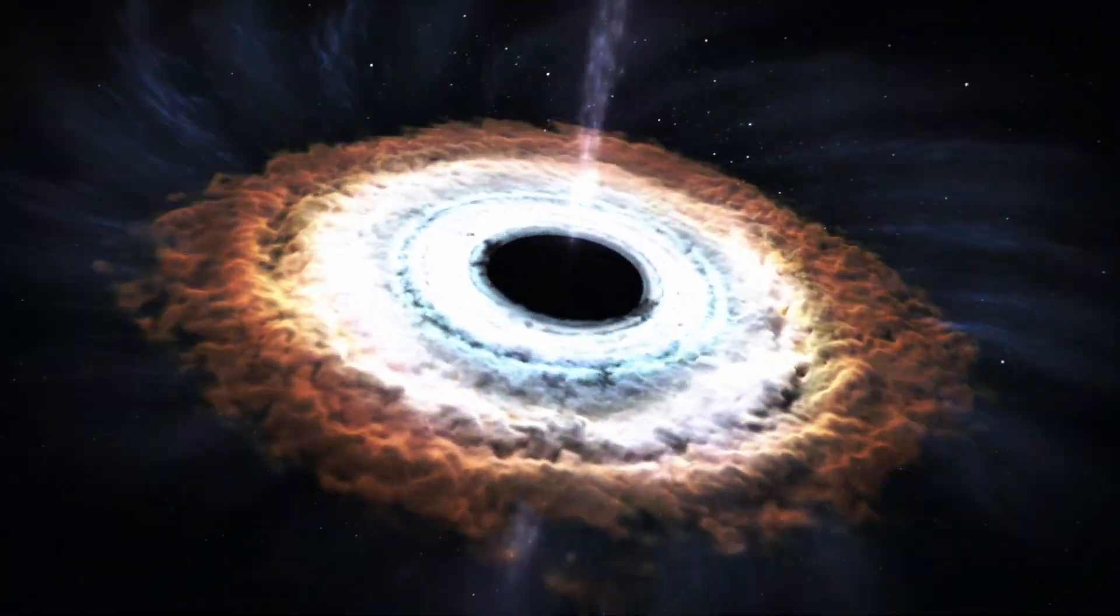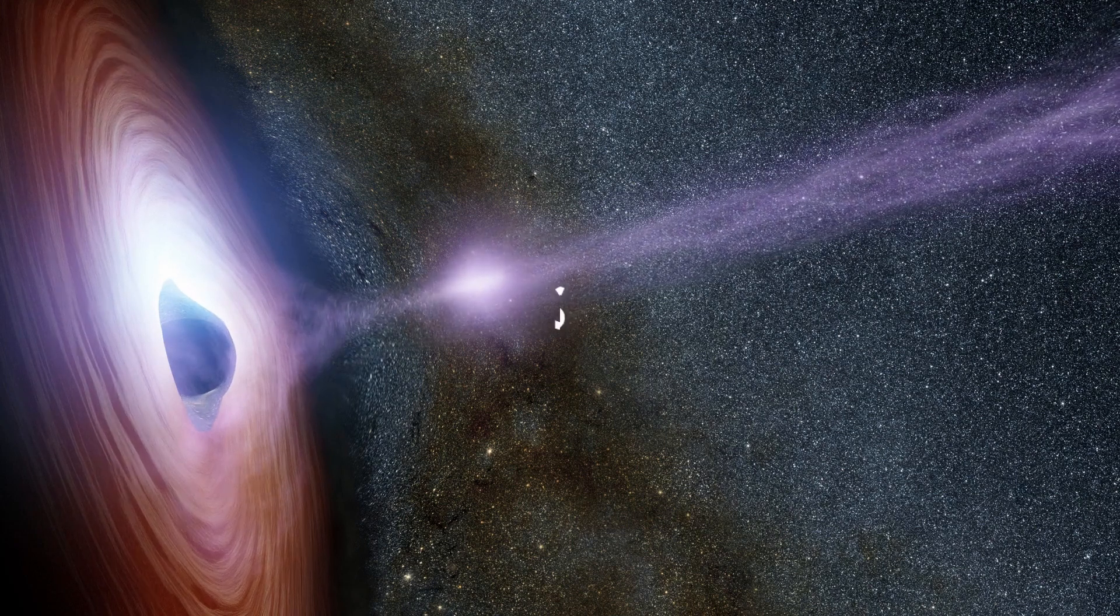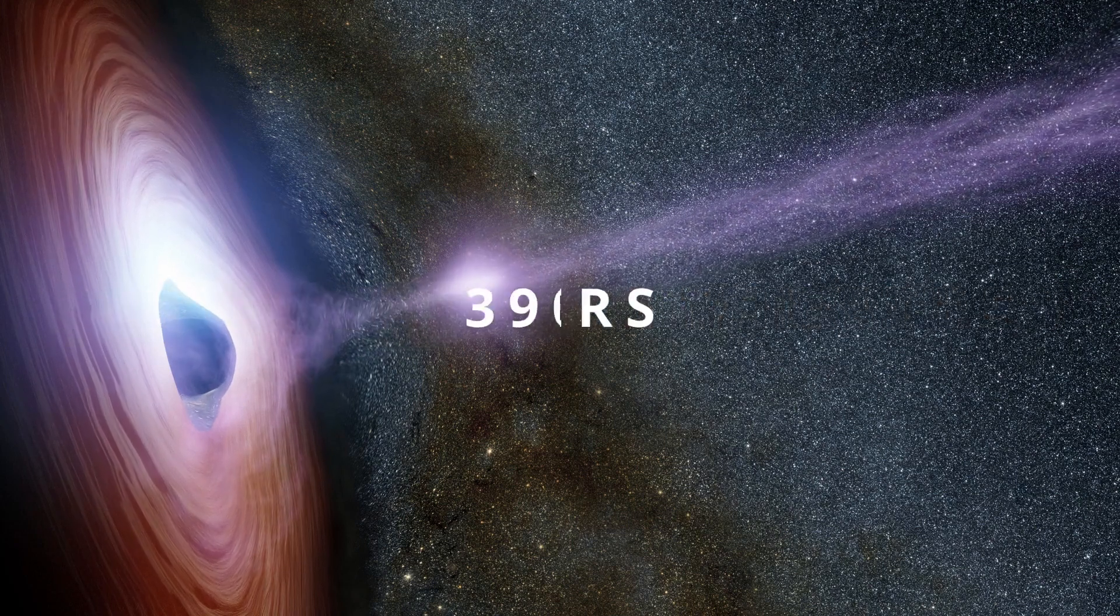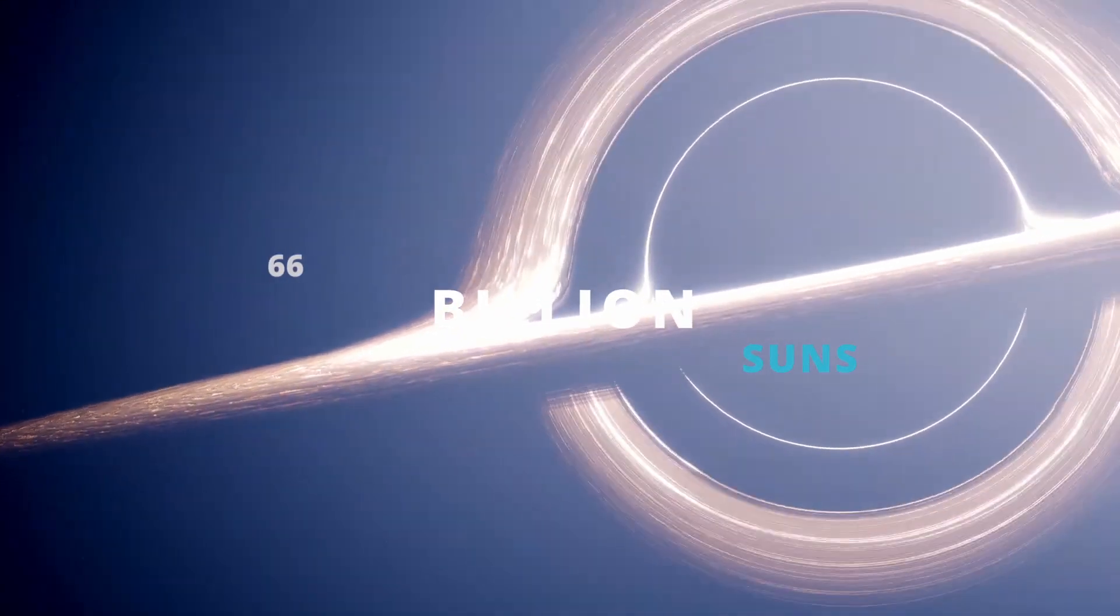TON 618 is the second biggest black hole with a gigantic diameter of 390 billion kilometers. This monster black hole contains a mass of 66 billion Suns.